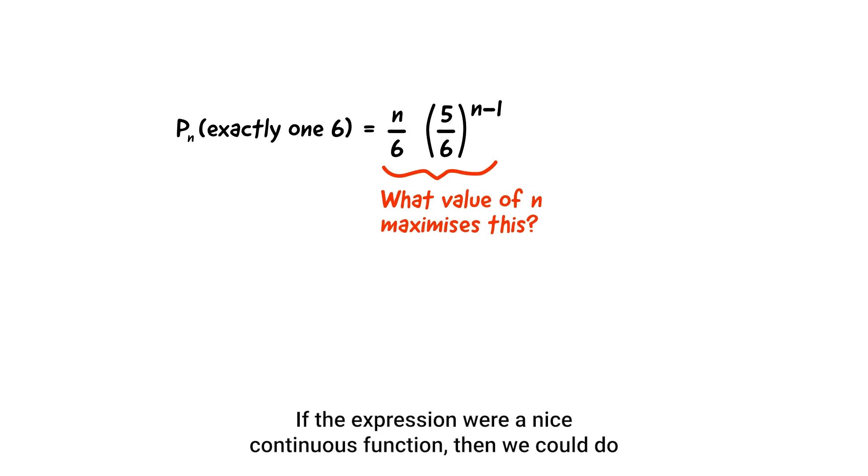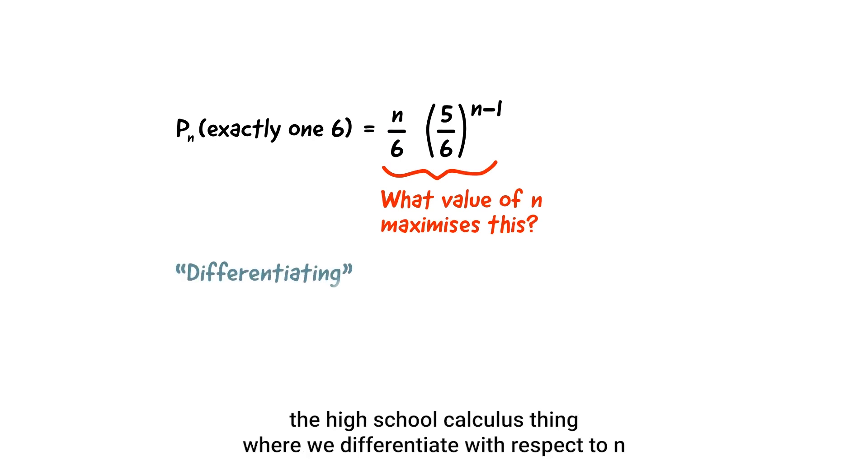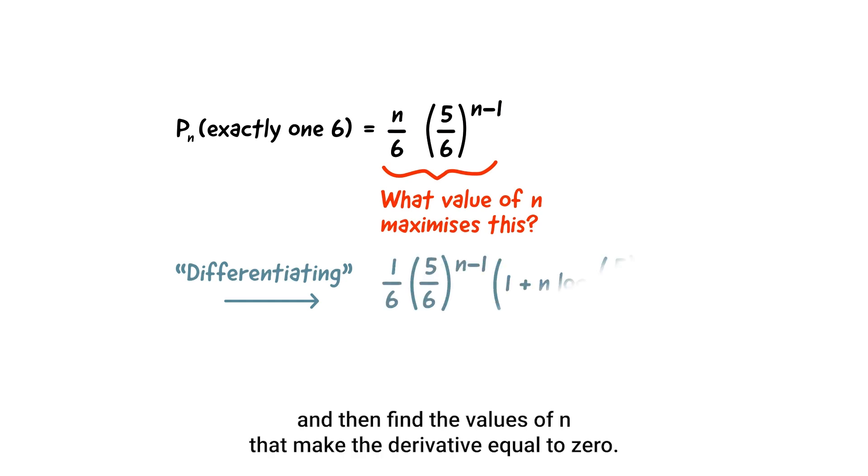If the expression were a nice continuous function, then we could do the high school calculus thing, where we differentiate with respect to n, and then find the values of n that make the derivative equal to zero.